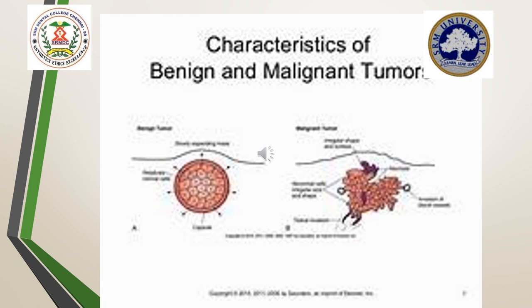The next criteria is microscopic features. Under this heading, we discuss the pattern. All benign tumours resemble the tissue of origin — there is a close resemblance to the parenchymatous cells. In contrast, in malignant tumours, resemblance to the tissue of origin is very minimal, as the malignant tumour rapidly and aggressively grows and completely replaces the normal tissue of origin. The basal polarity in case of a benign tumour is always maintained, in contrast to a malignant tumour where basal polarity is completely lost.